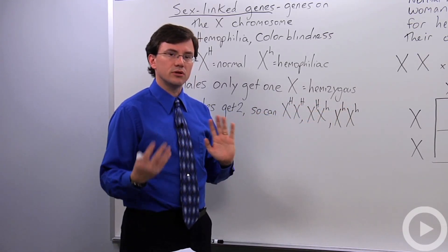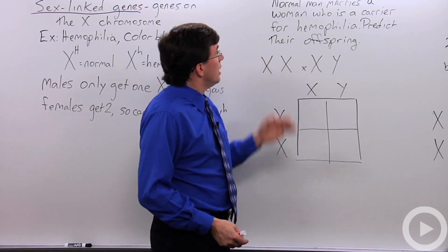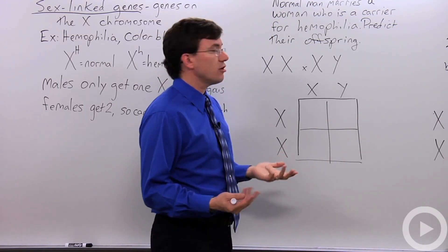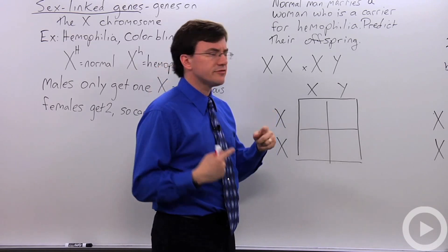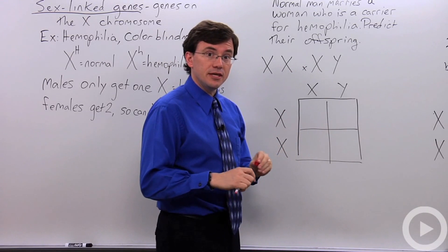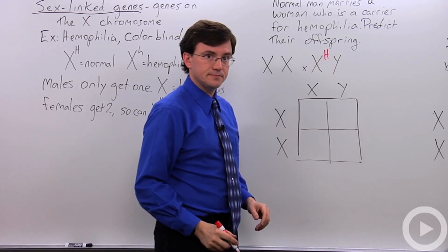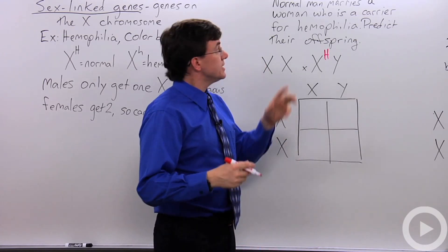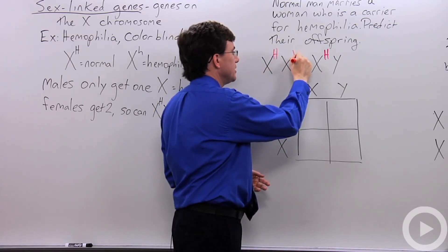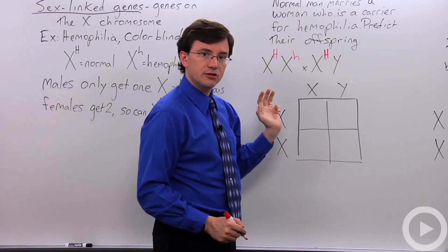Here's a standard kind of question: a normal man marries a woman who is a carrier for hemophilia — predict their offspring. A normal man means he does not have the hemophilia allele, so he has the normal blood clotting allele. The woman is normal but a carrier, meaning she has one normal and one hemophilia allele, so she is heterozygous for this trait.